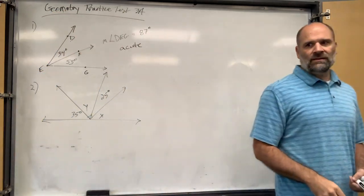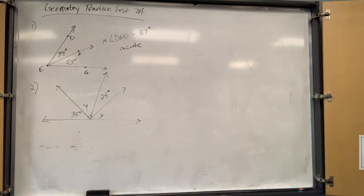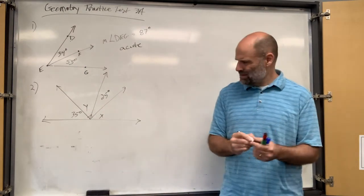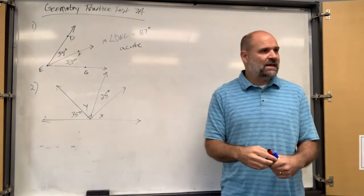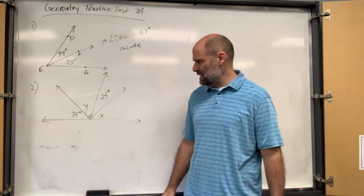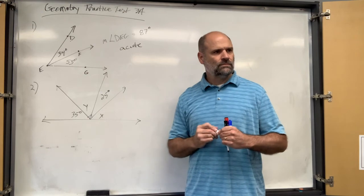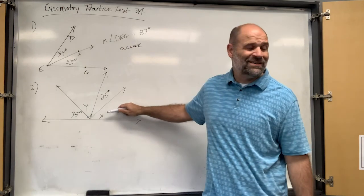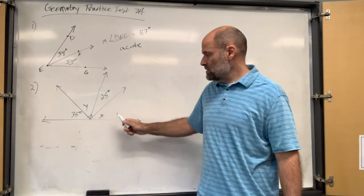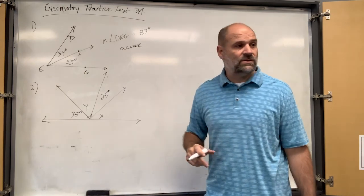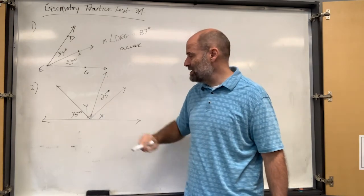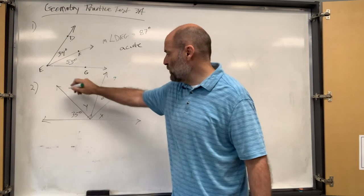Let's do y first. We know that little square means it's a right angle, so the whole thing has to be 90 degrees. So 90 minus 25 — this part is 25 — so the complementary angle to 25 is what? 90 degrees.